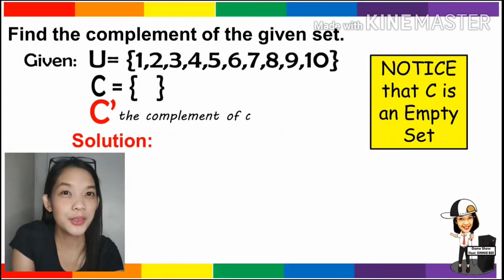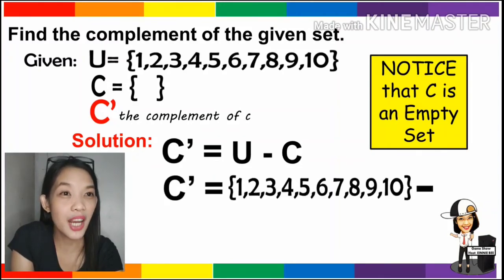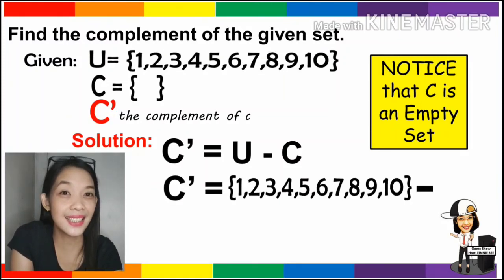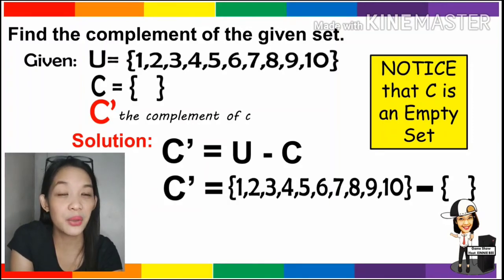And for the last one, to get the complement of C, we compute the universal set minus set C. We must list the elements of the universal set, which are 1 to 10, then subtract the elements of C. But notice that set C is an empty set, and therefore it has no elements. Now, what are the elements that we're going to remove?